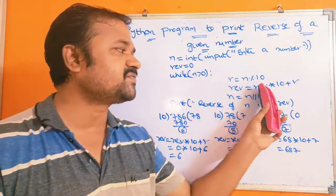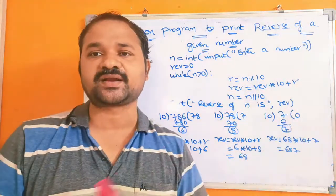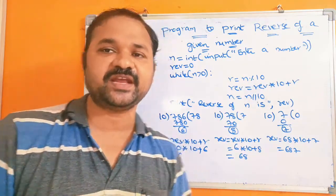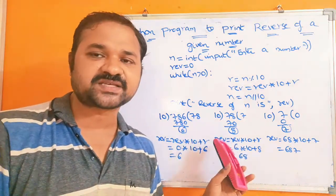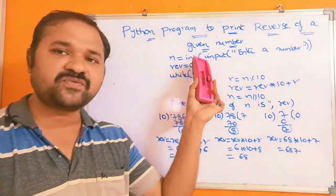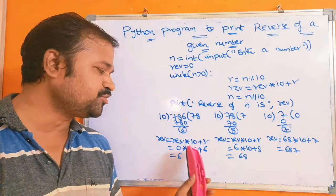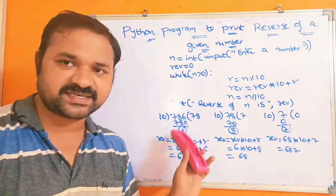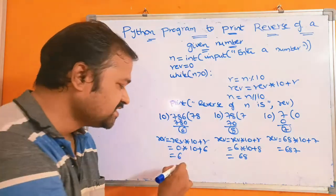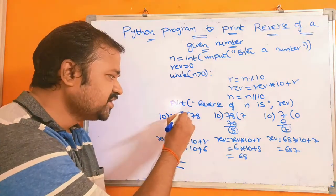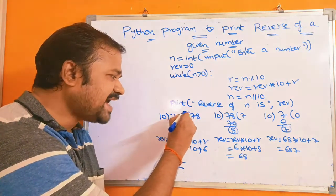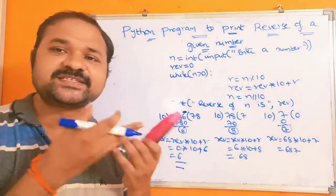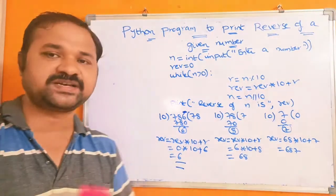Next, rev = rev * 10 + r. The initial value of rev is 0, so 0 * 10 = 0, and 0 + 6 = 6. So after the first iteration we got the reverse of the last digit as the output. The reverse of the last digit 6 is 6, so we got 6 as the result.